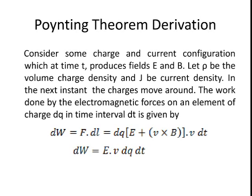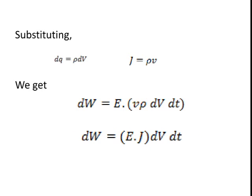on an element of charge dq in time interval dt is given by dW equals the dot product of Lorentz force and displacement. Substituting dq equals rho dV and J equals rho v we get dW is equal to dot product of E and J multiplied by dV and dt.